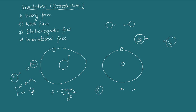G is called the universal constant because its value is the same for any pair of masses and is independent of the nature of the medium in which the masses are kept. Placing any medium between the two bodies does not affect the gravitational force measured.